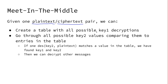Afterwards, when we have this table of all possible decryptions under key1, we go through all possible key2 values, encrypt our known plaintext, and then compare the encryption of our known plaintext with key2 against the decryptions of the ciphertext with key1. We go through this table until we find a row where the decryption of the ciphertext under key1 is identical with the encryption of the plaintext with key2.